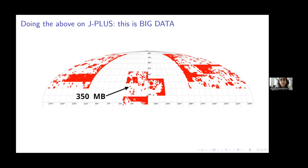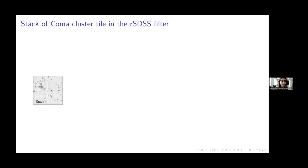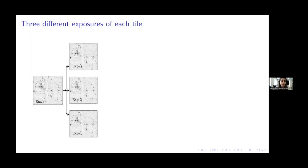Now I want to show you how complicated my project was and how I fixed all of these problems with Maneage. This is one tile of J-PLUS — the Coma Cluster tile. For one exposure and one filter, I want to show you how I created the PSF. Each tile has at least three different exposures, all belonging to SDSS filters. I wanted to create a different PSF for each exposure to know whether the PSF changes from exposure to exposure. For this I used individual stars in each exposure.